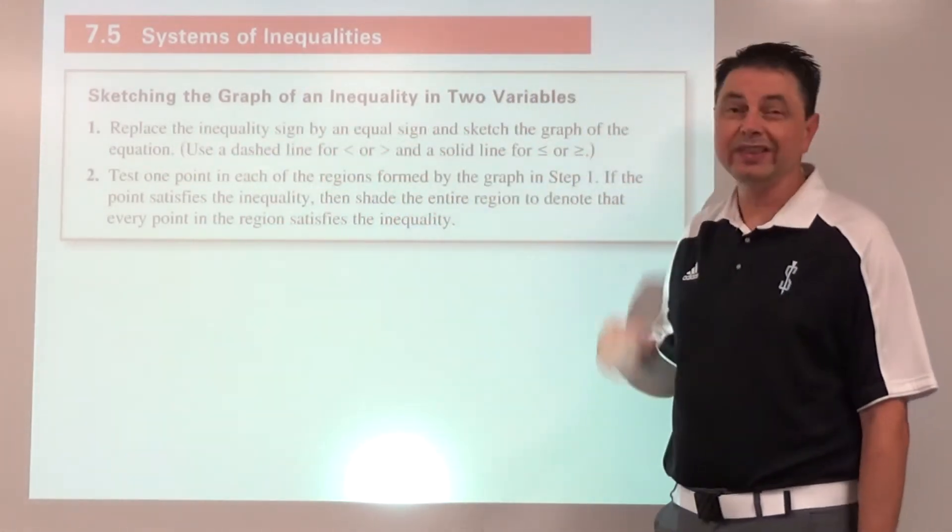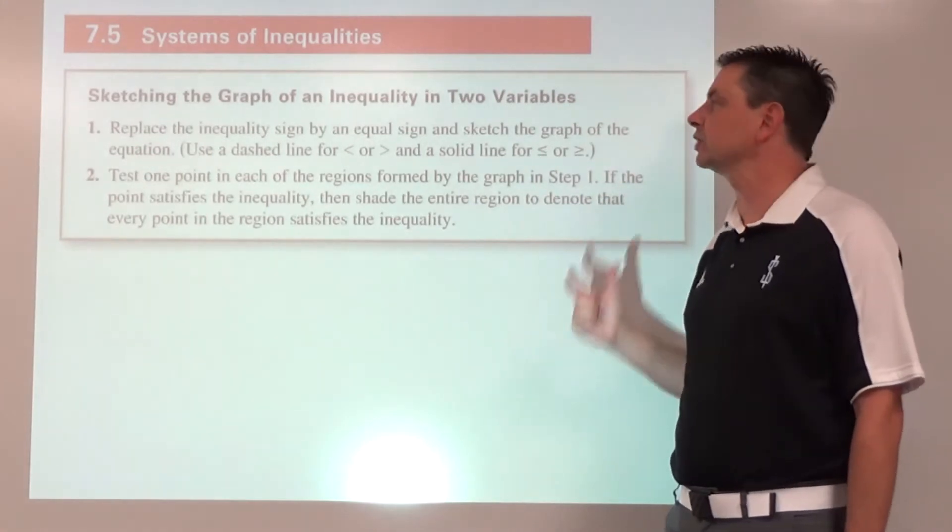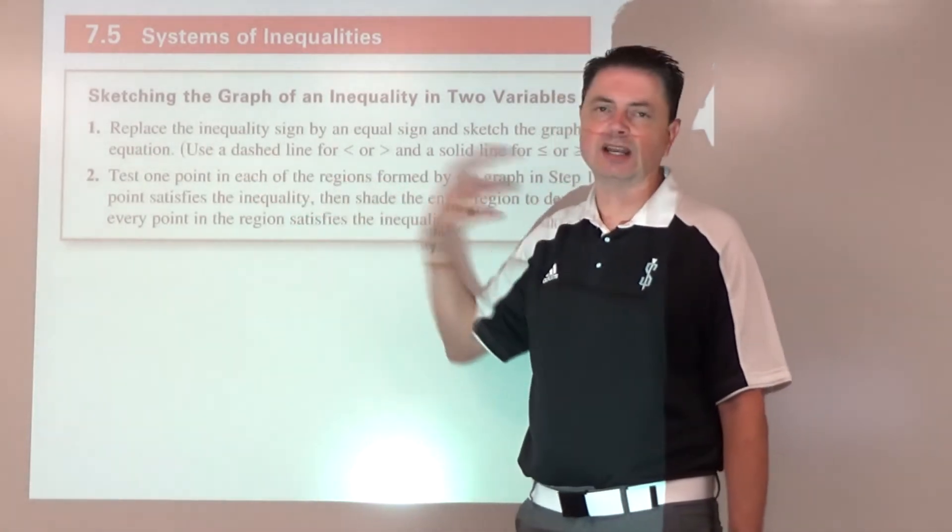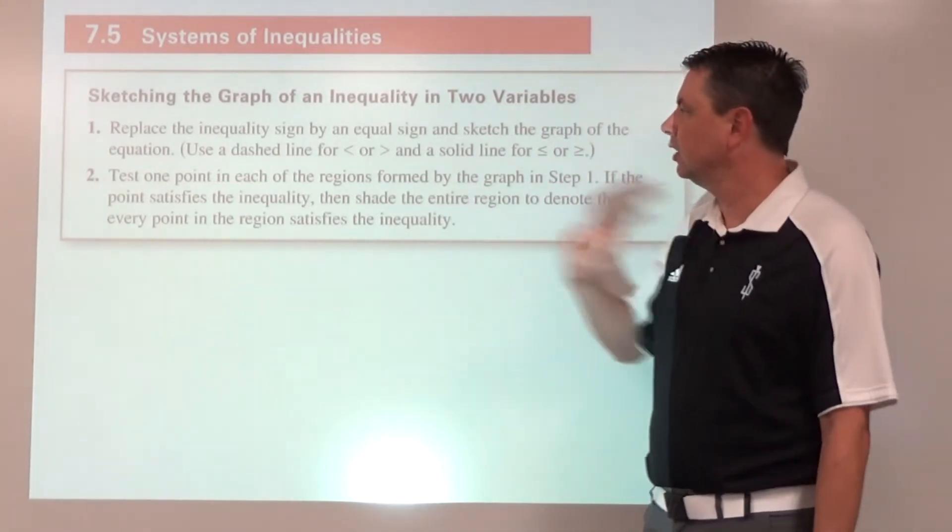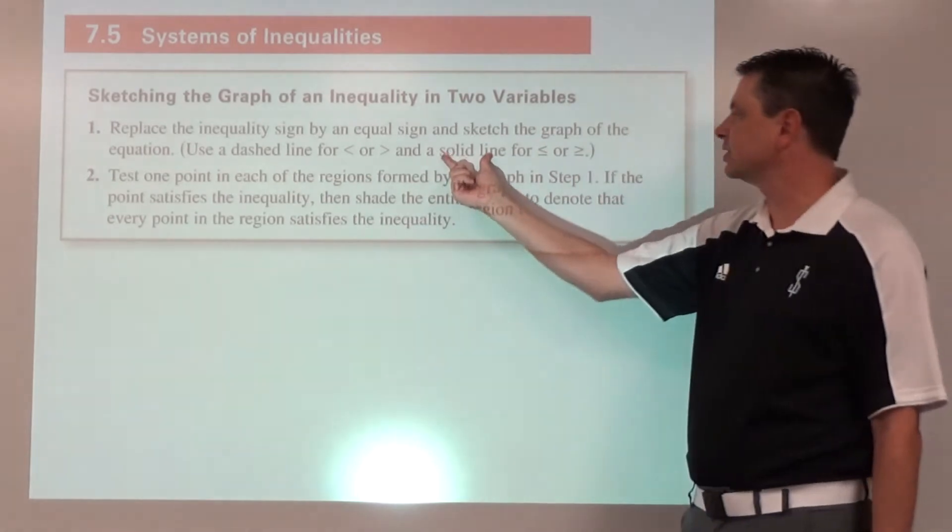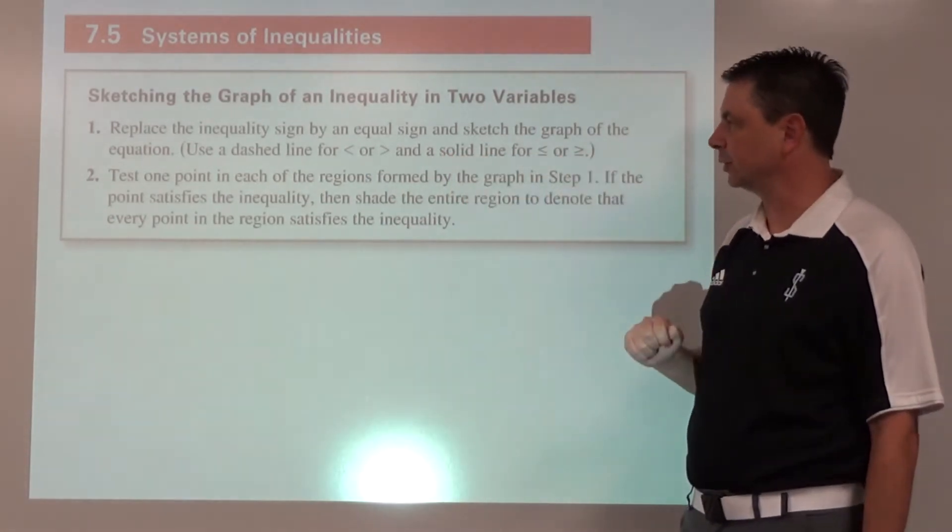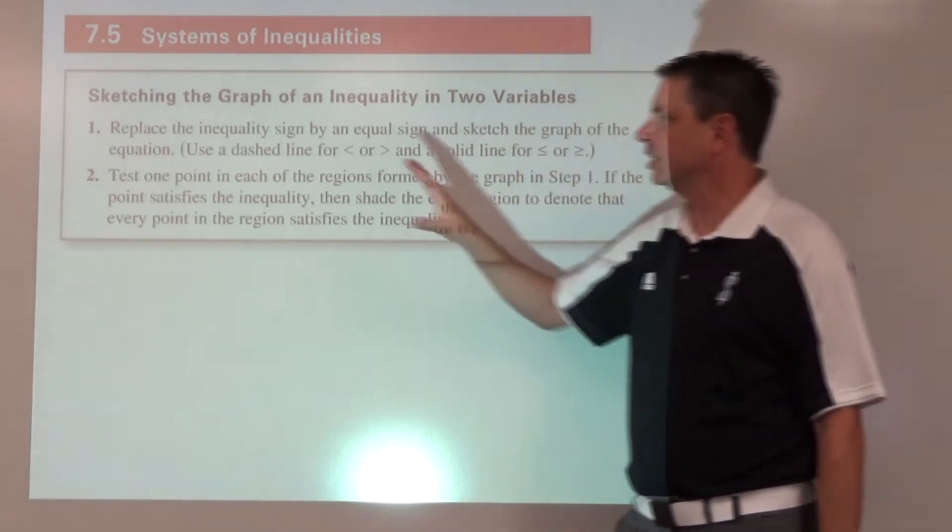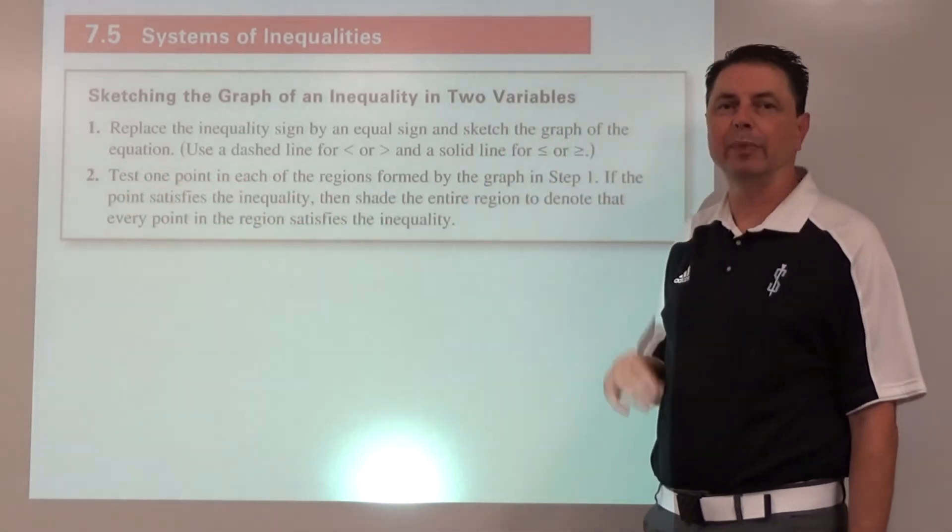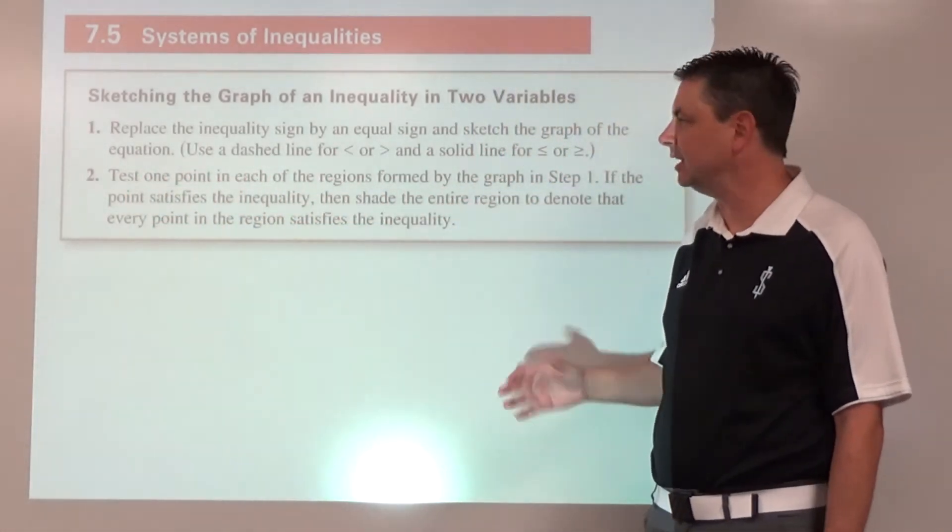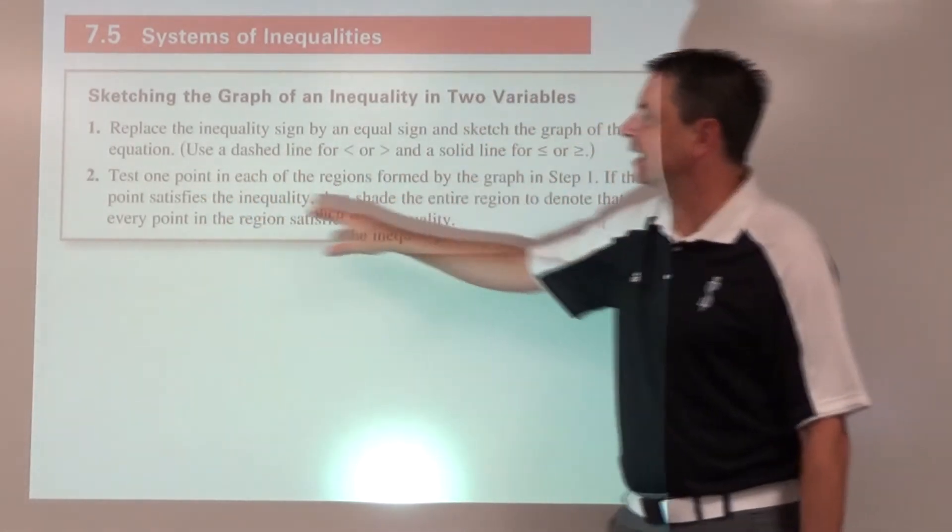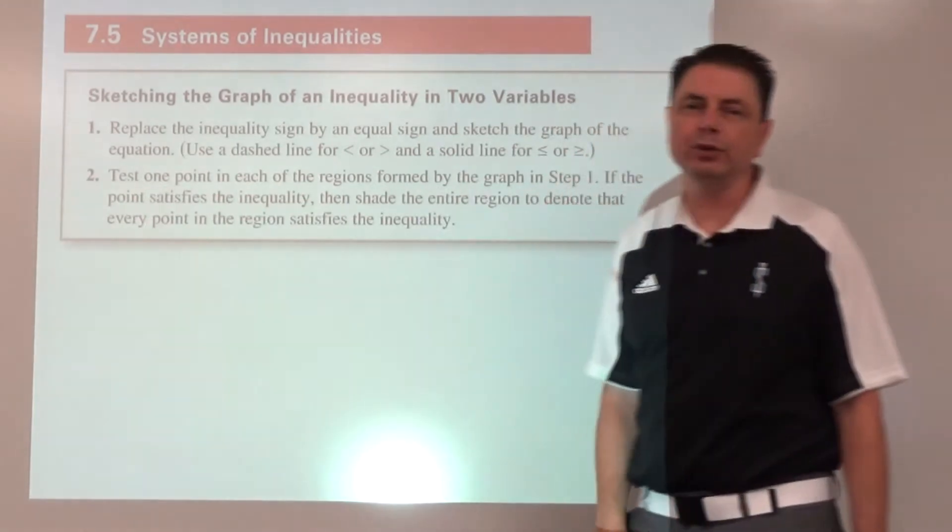In terms of what we're doing with graphing an inequality, we're going to replace the inequality sign with an equal sign and graph the boundary function. Now we're going to use a dashed line, usually say dotted line, for strictly less than or strictly greater than, and a solid line for less than or equal to or greater than or equal to. Then we are going to shade on one side of the boundary curve or boundary line. Shade on one side, and that can be determined by doing a test point.